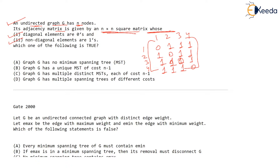Every vertex is adjacent to every other vertex — that is what they say — because only diagonal elements are zero. One is adjacent to two, one is adjacent to three, one is adjacent to four, and four is adjacent to all, three is adjacent to all. So it's a complete graph, although they did not use the word 'complete undirected graph.' You easily know that every vertex is adjacent to every other vertex. And the weights are one — that is what they are saying.